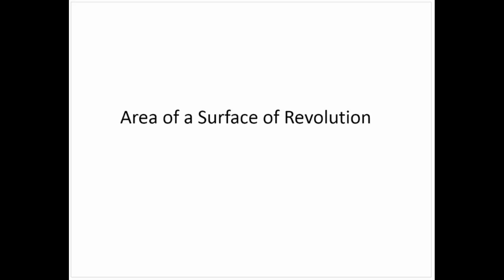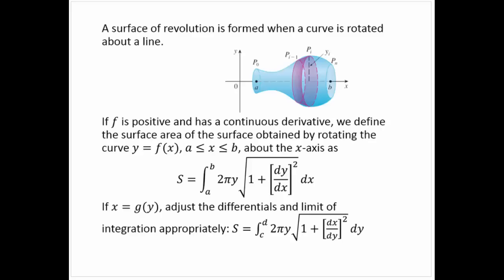Area of a surface of revolution. A surface of revolution is formed when a curve is rotated about a line. We're going to focus on rotating a curve about the x-axis. If we have a positive function that has a continuous derivative, we define the surface area obtained by rotating the curve f of x from the interval a to b about the x-axis as the integral from a to b of 2π y times the square root of 1 plus (dy/dx)² dx.